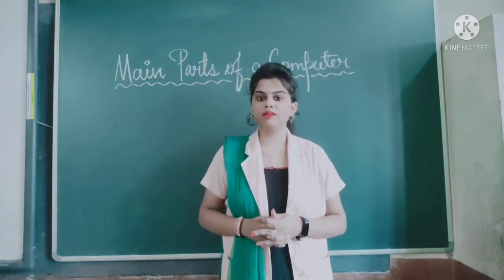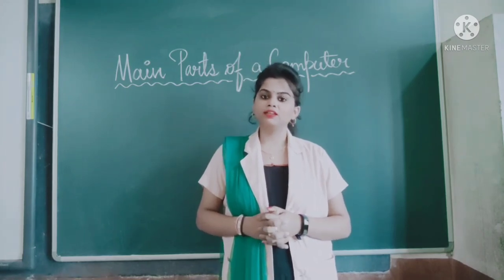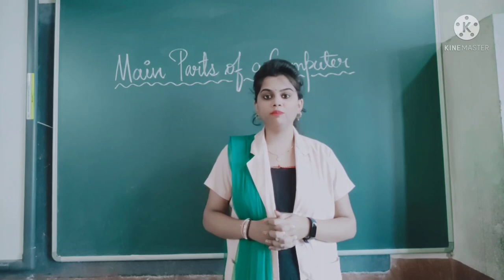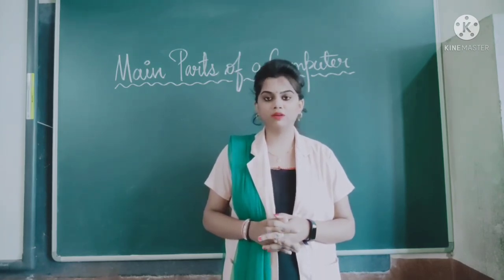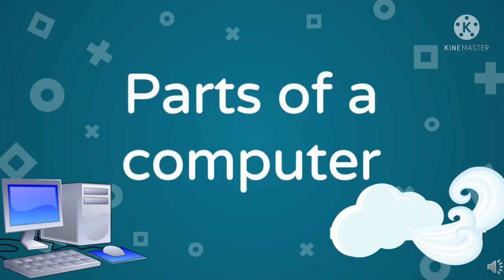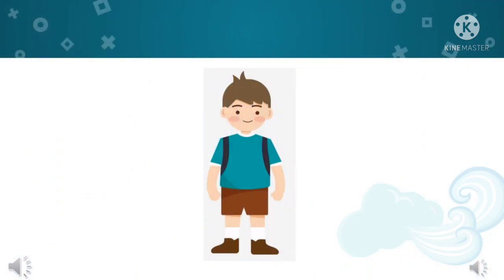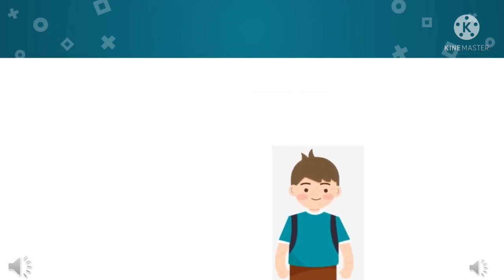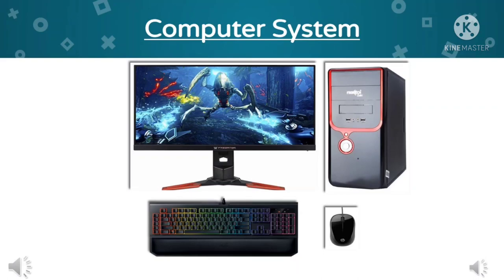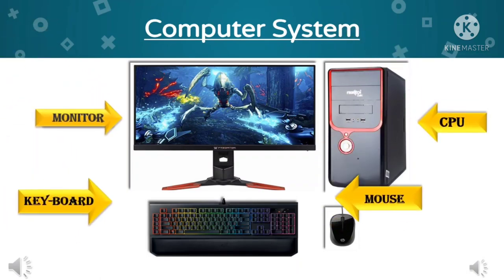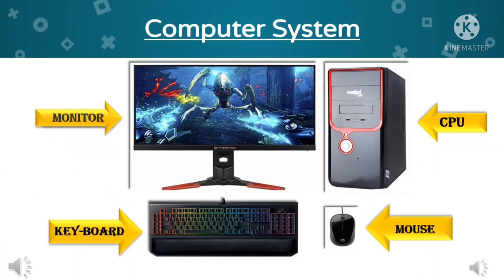Just like human beings who have many different parts of the body, a computer also has different parts. Now let us learn the main parts of a computer. Just as a human body is made up of various parts like eyes, nose, ears, hands, and legs, a computer is also made up of various parts. All these parts together make a computer work. A computer has four main parts: Monitor, CPU, Keyboard, and Mouse. Let us learn about these parts one by one.